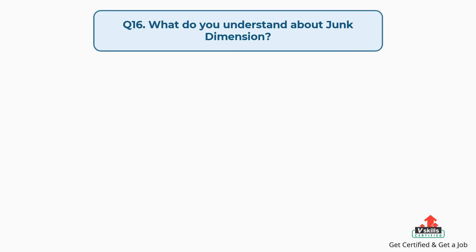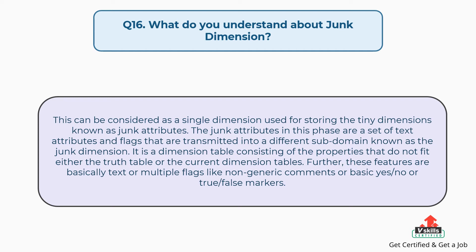Question number sixteen: What do you understand about junk dimension? A junk dimension can be considered as a single dimension used for storing tiny dimensions known as junk attributes. The junk attributes are a set of text attributes and flags that are transmitted into a subdomain known as the junk dimension — a dimension table consisting of properties that do not fit either the fact table or the current dimension tables, such as non-generic comments or basic yes/no and true/false markers.